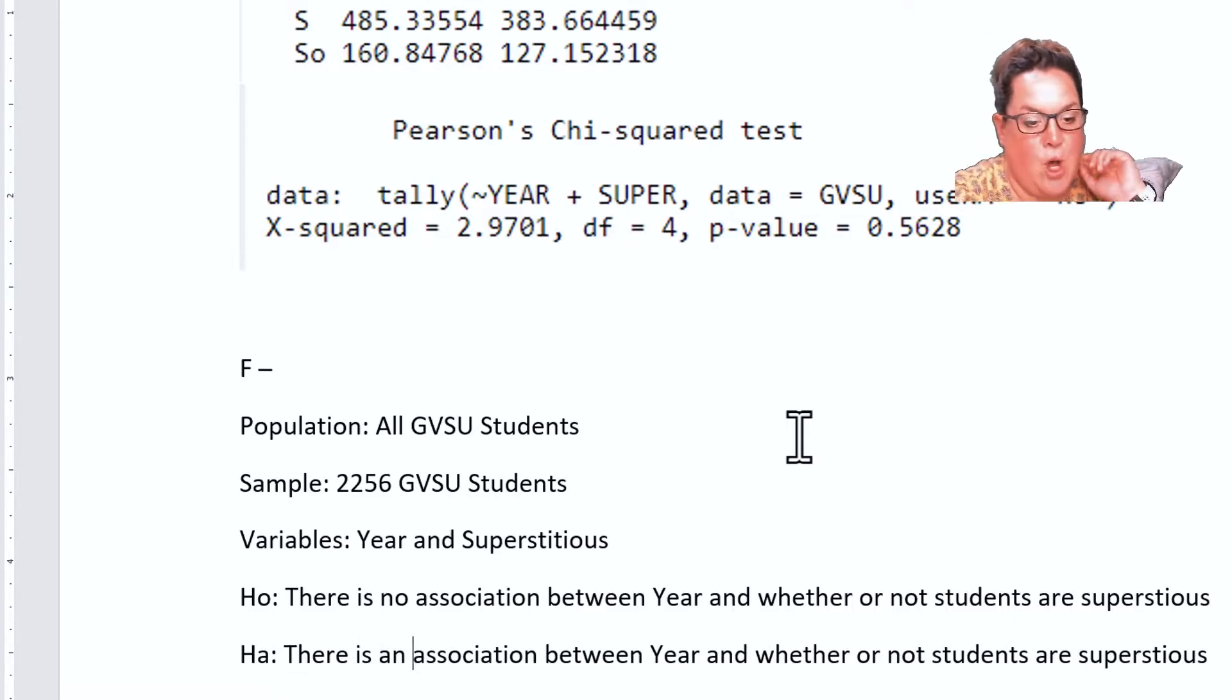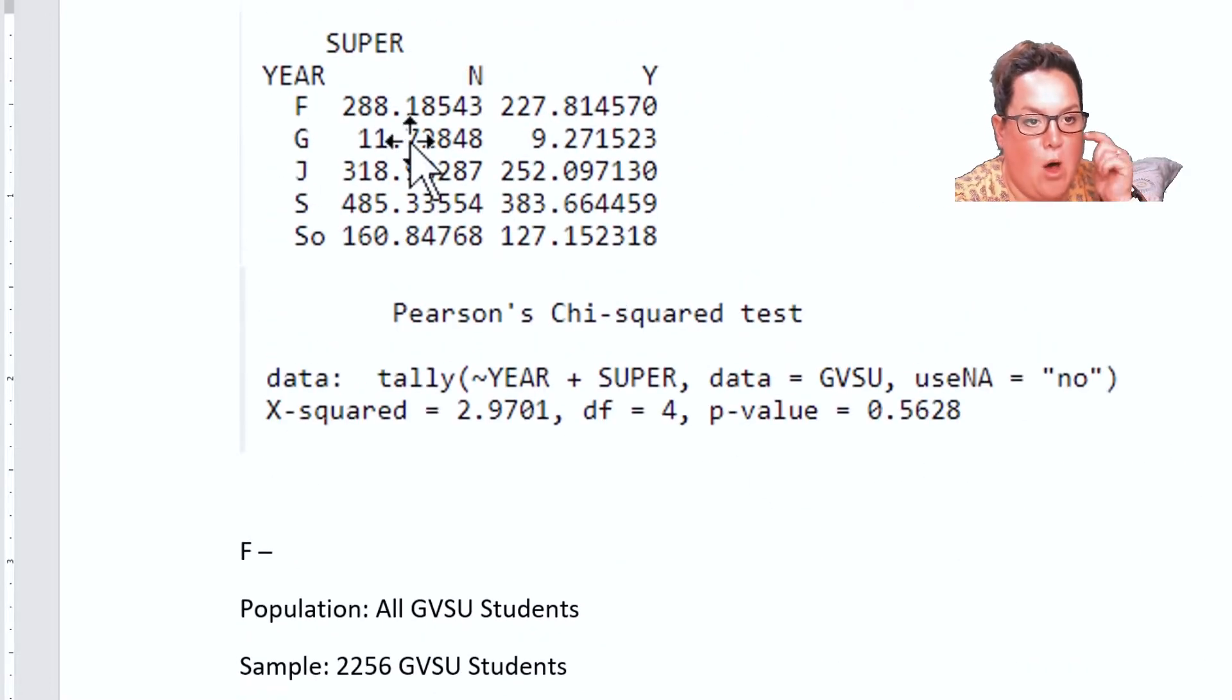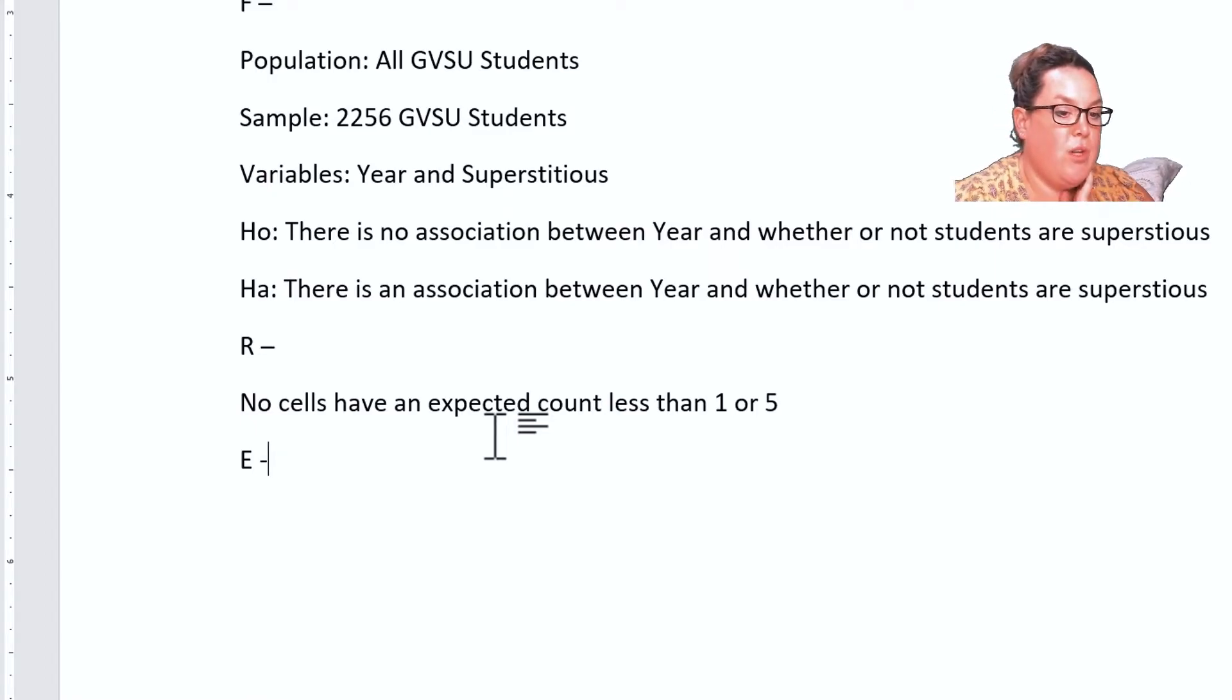That's the F in our FRED. Now we can review conditions. We have all of these expected counts and you can see that my smallest is nine, so no cells have an expected count less than one or five. Remember that with the R you're reviewing conditions - less than 20% of cells can have an expected count less than five and none can ever be less than one. Since our lowest is nine we know that means both of those conditions are met.